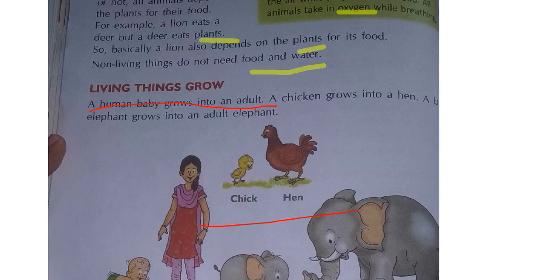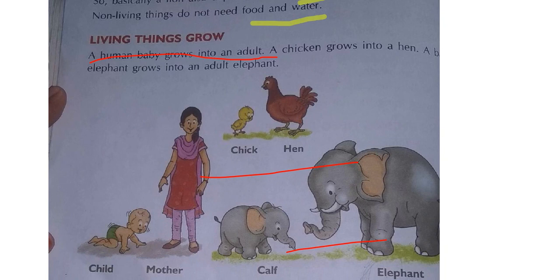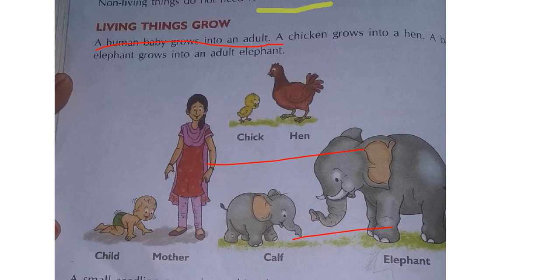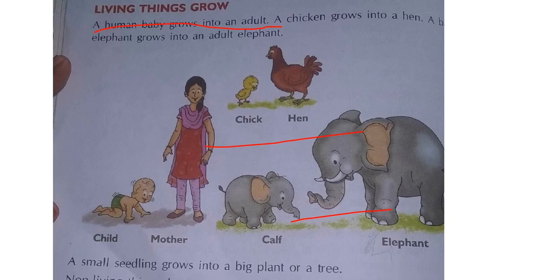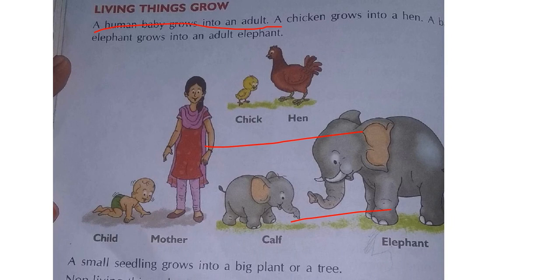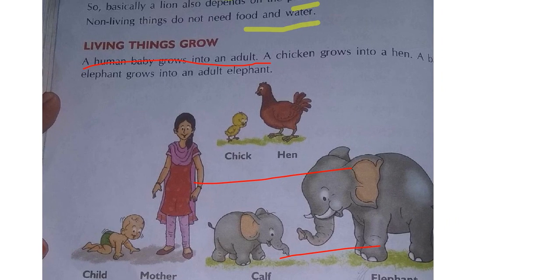Living things grow. Will you grow? Now you are in third class at a certain height — when you reach tenth class, you will have grown. See this picture: a baby is very small, and when it becomes big, it grows like an adult. A baby chick is very small and grows into a big hen. A baby elephant — called a calf — is very small and grows into a very large elephant. Every living thing grows.